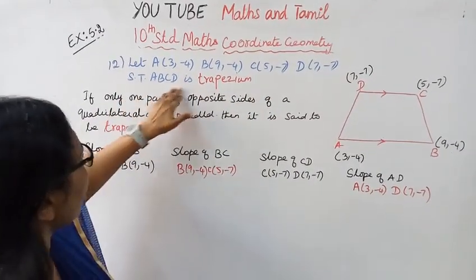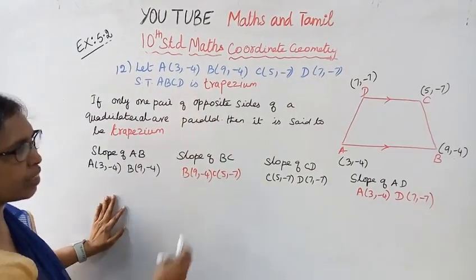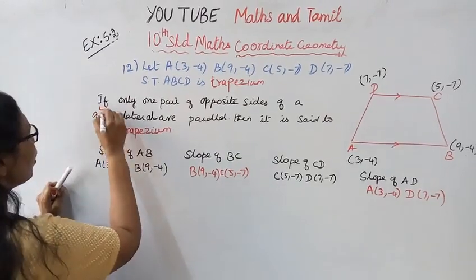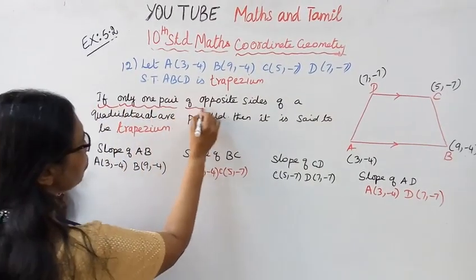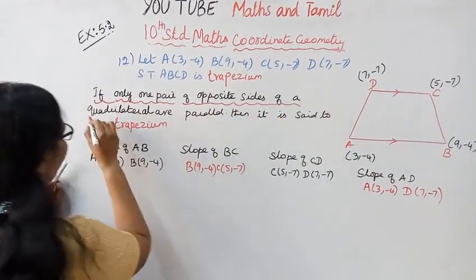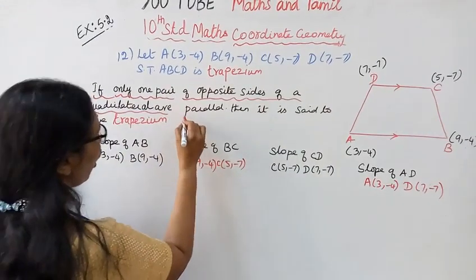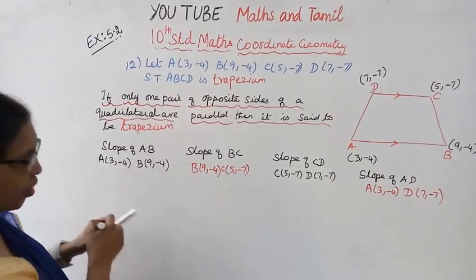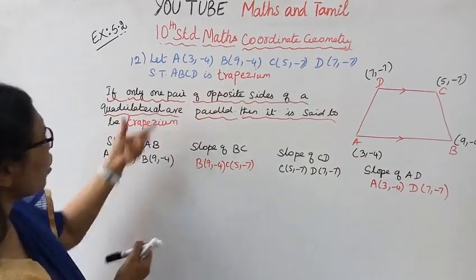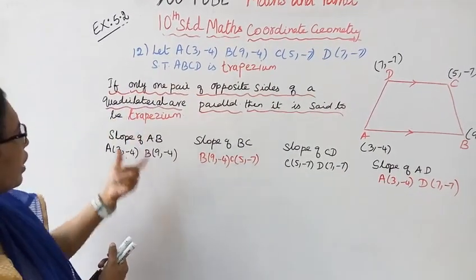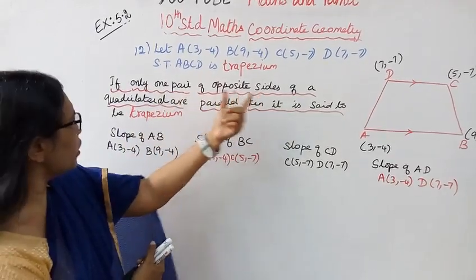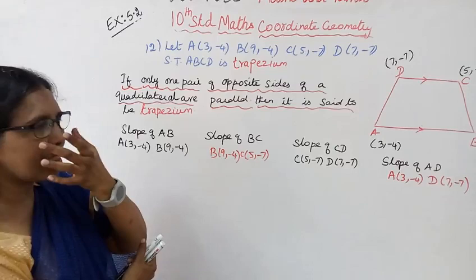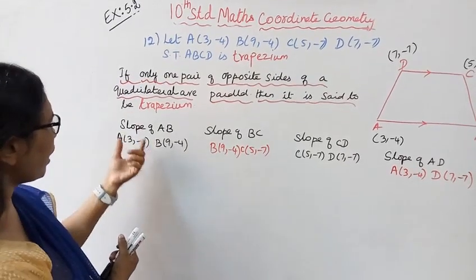We need to show that A, B, C, D form a trapezium. If only one pair of opposite sides of a quadrilateral are parallel, then it is said to be a trapezium.